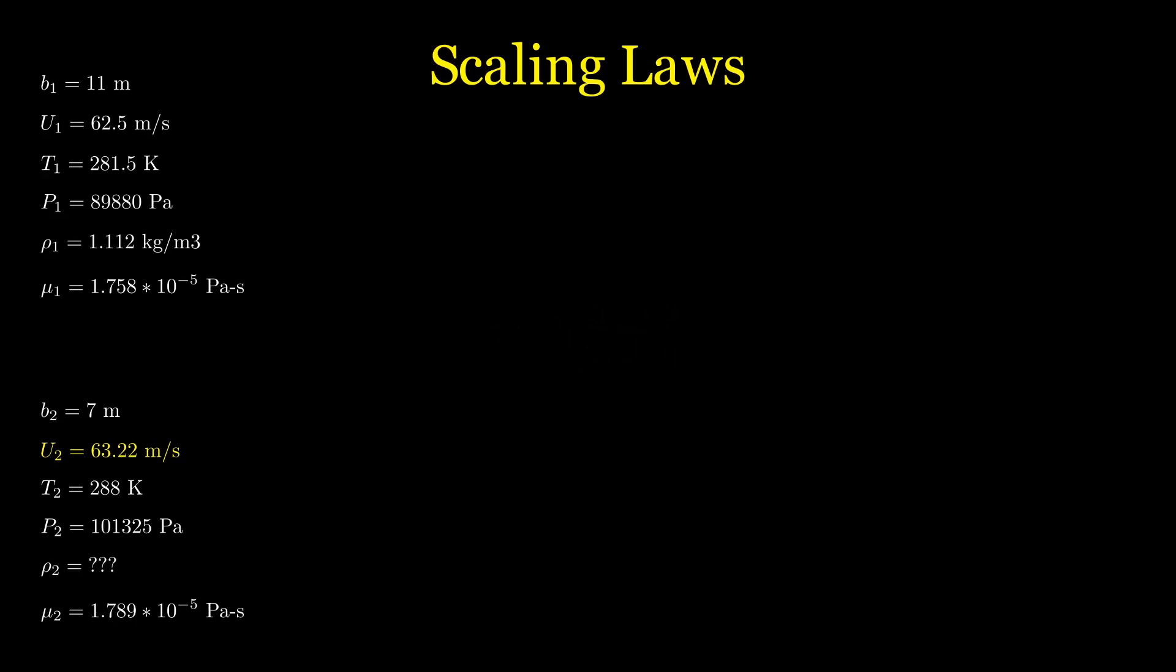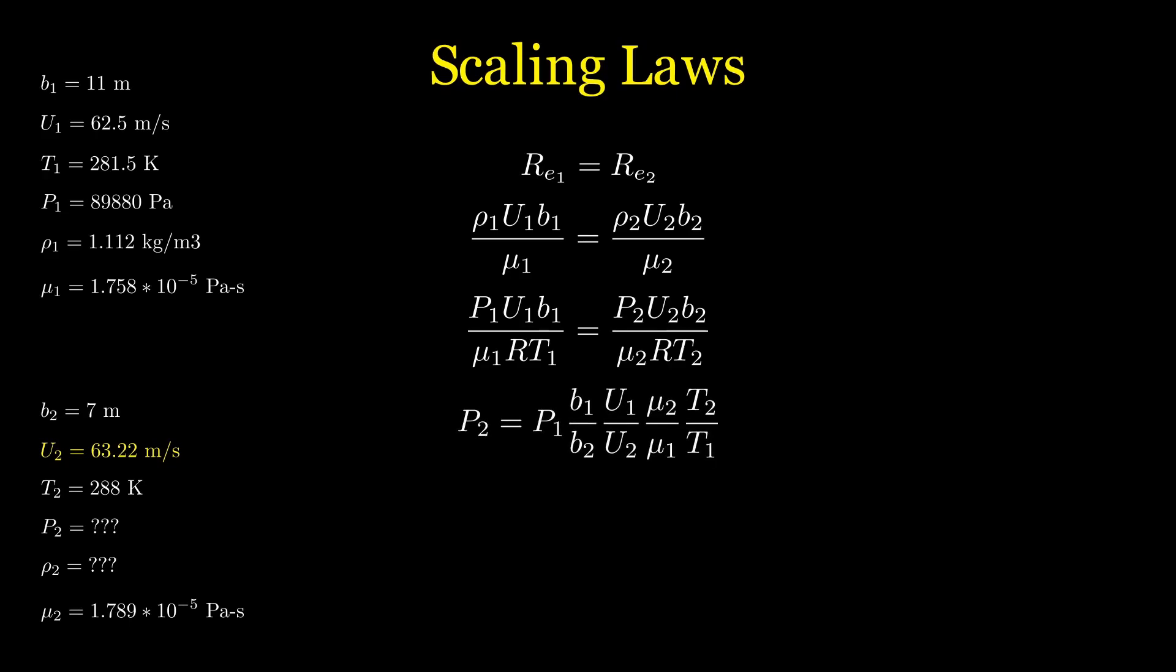We set up the Reynolds again, and this time we replace the rhos with the ideal gas law. Now we can find the pressure to set the tunnel to by solving for P2. We find we need 148 kilopascals to get similitude.